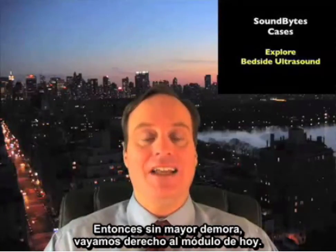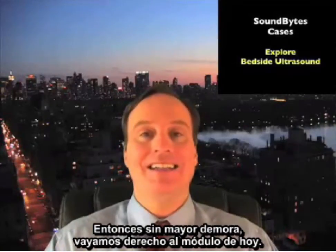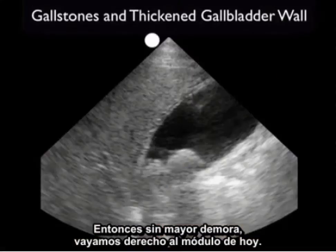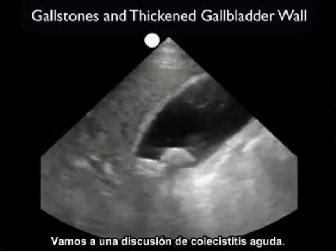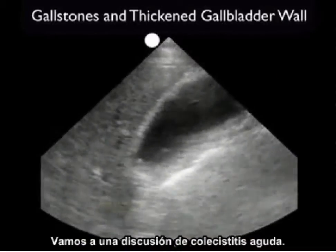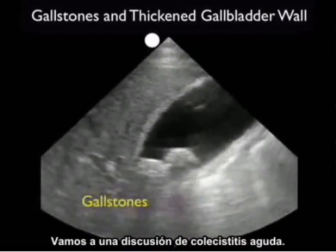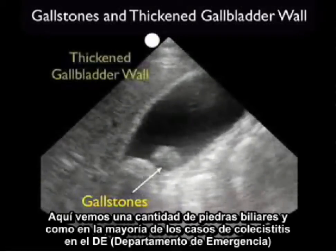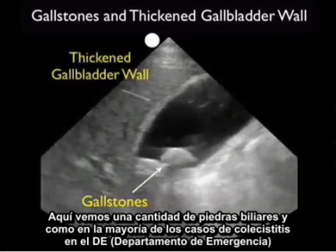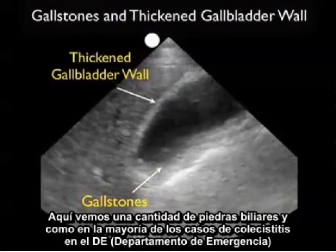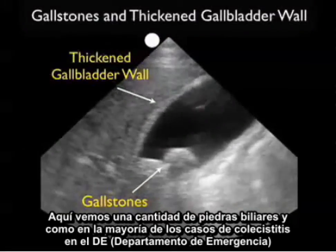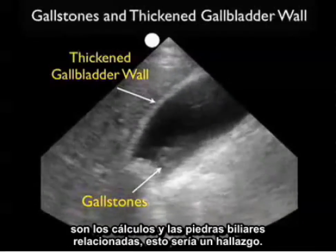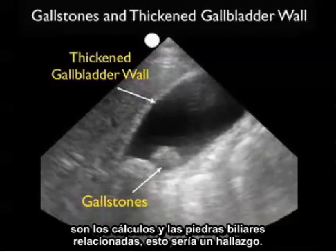So without further delay, let's get right into today's module. Let's move on to a discussion of acute cholecystitis. Here we see a number of gallstones, and as most cases of cholecystitis in the ED are calculus or gallstone related, this would be a signature finding.